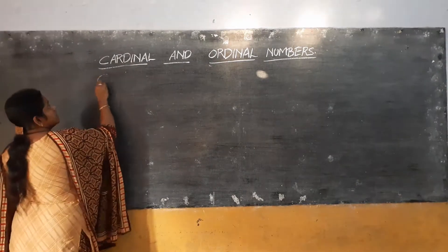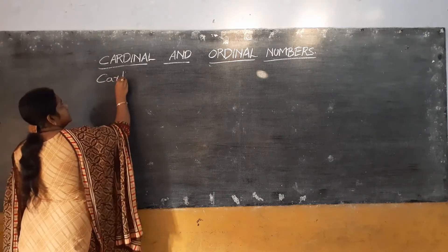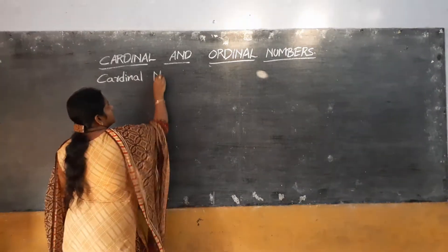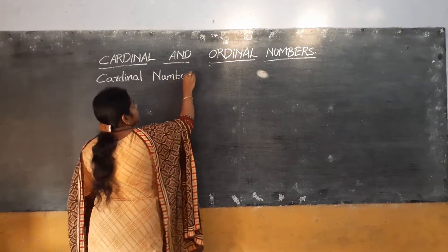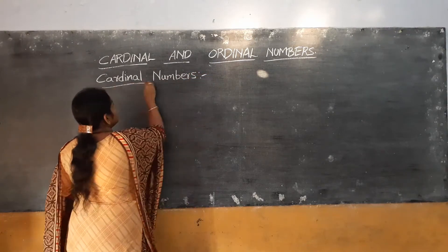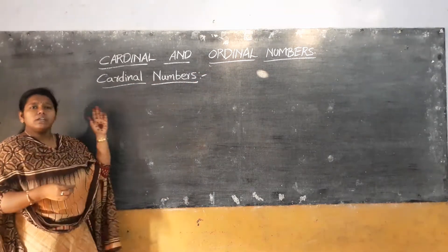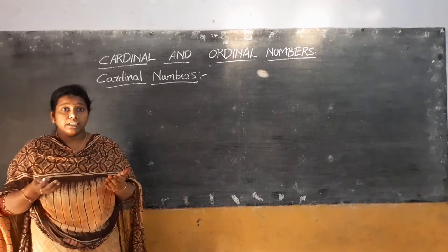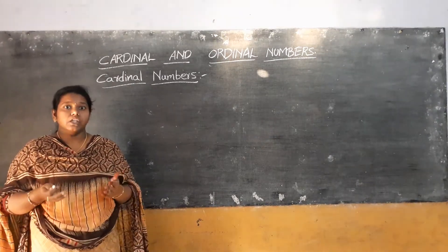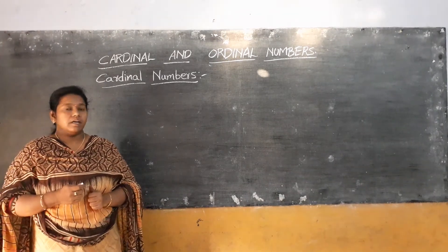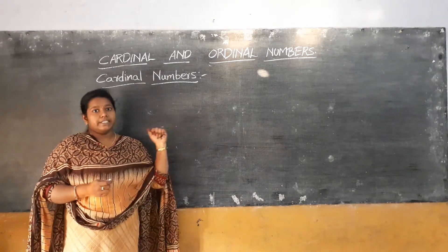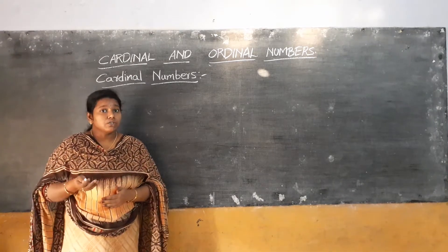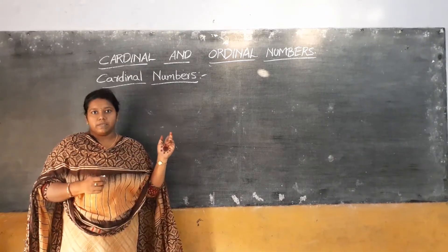Cardinal numbers. What are these cardinal numbers? The numbers which we are using to count and to write are called cardinal numbers. Cardinal numbers are the numbers that we use to count or to write.